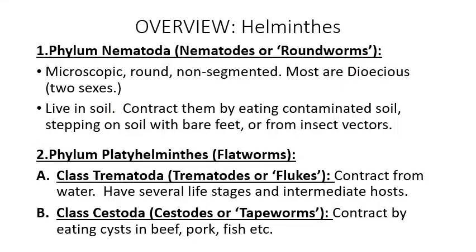Now the flatworms, phylum Platyhelminthes, have two classes important to us. One is class Trematoda — commonly referred to as trematodes or flukes. The word 'fluke' in everyday English means a lucky mistake, but anyone with biology training understands it means a type of microscopic worm that can be particularly dangerous to humans.